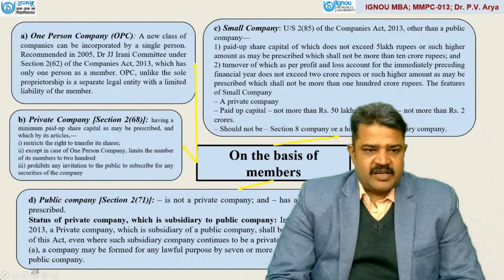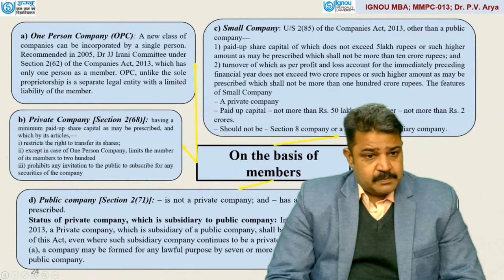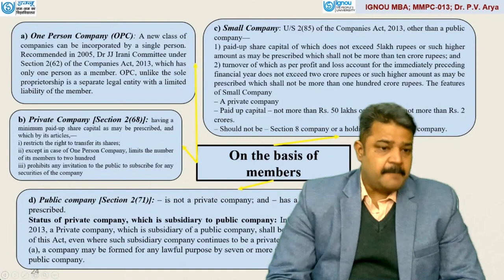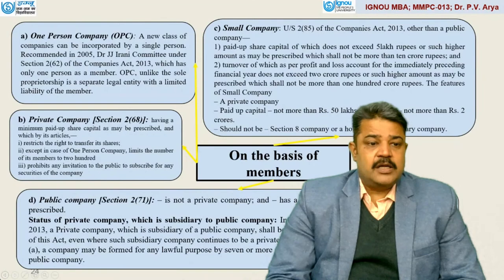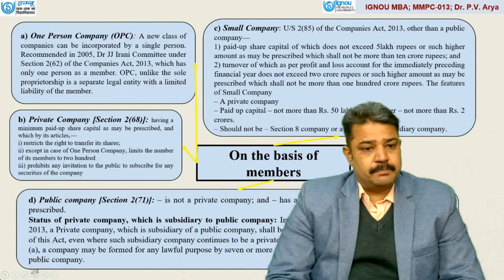Private company is defined under Section 2, Subsection 68 — having a minimum paid-up share capital as may be prescribed, and which by its articles restricts the right to transfer its shares, limits the number of its members to 200 (except in case of one person company), and prohibits any invitation to the public to subscribe for any securities of the company.